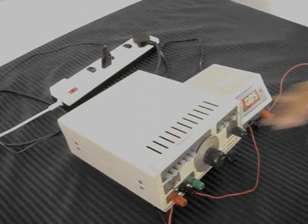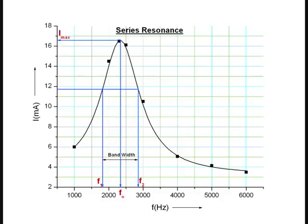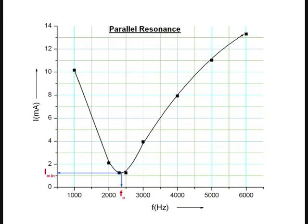After completing the experiment, switch off the circuit and remove the connections. A graph of current against frequency is plotted for both series and parallel circuits on two separate graph sheets. From the series resonance curve, the resonant frequency f₀ at peak current i_max, and the half-power frequencies f₁ and f₂ at i_max/√2 are determined. Bandwidth, quality factor, and inductance values are then calculated. From the parallel resonant curve, the frequency f₀ corresponding to minimum current is obtained.